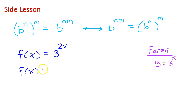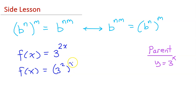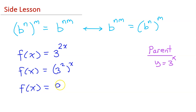Similarly, f of x can be rewritten as 3 squared to the x power. 3 squared is 9, so f of x is 9 to the x power.